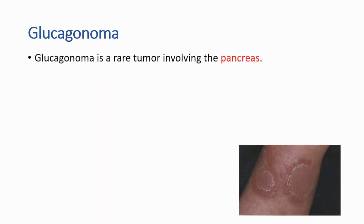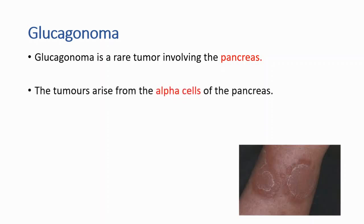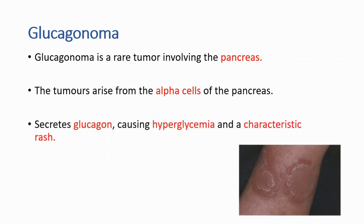First, it's a rare tumor involving the pancreas. The tumor arises from the alpha cells of the pancreas, and it secretes glucagon, causing hyperglycemia and a characteristic rash. You can see the rash from the image.